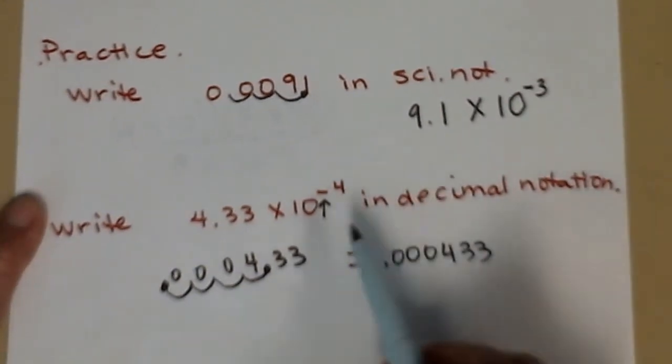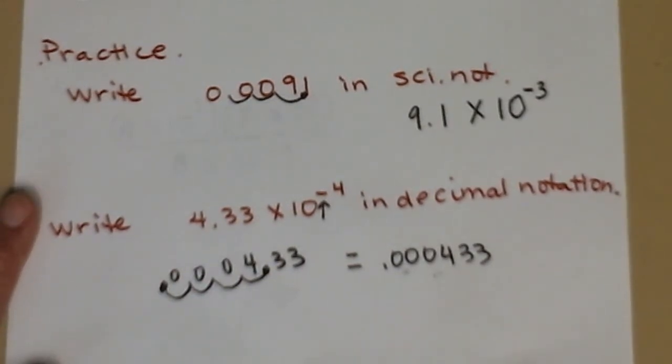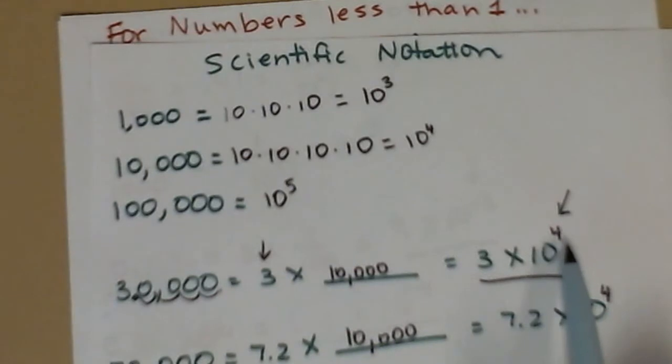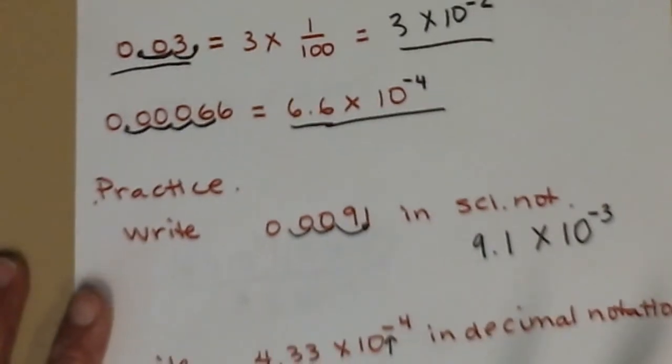So you might notice a pattern there. When we have numbers less than 1, it's one fewer of those zeros that go in front. When it was numbers bigger than 1, on our first page, whatever the power of the 10 was, that's how many zeros we have. Well, I guess there we had an extra decimal, so it doesn't always work. If that first one is just a single number, then it does. We can just count zeros.